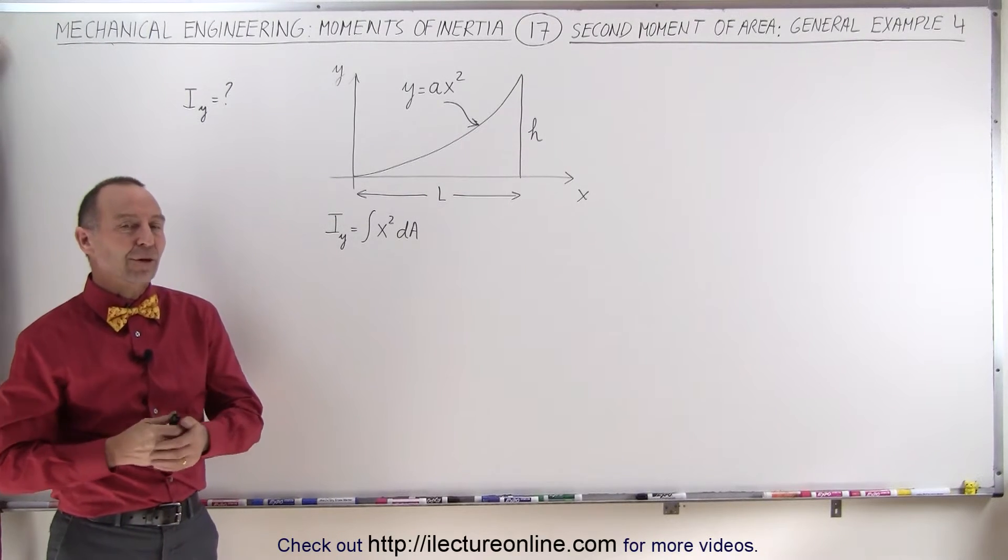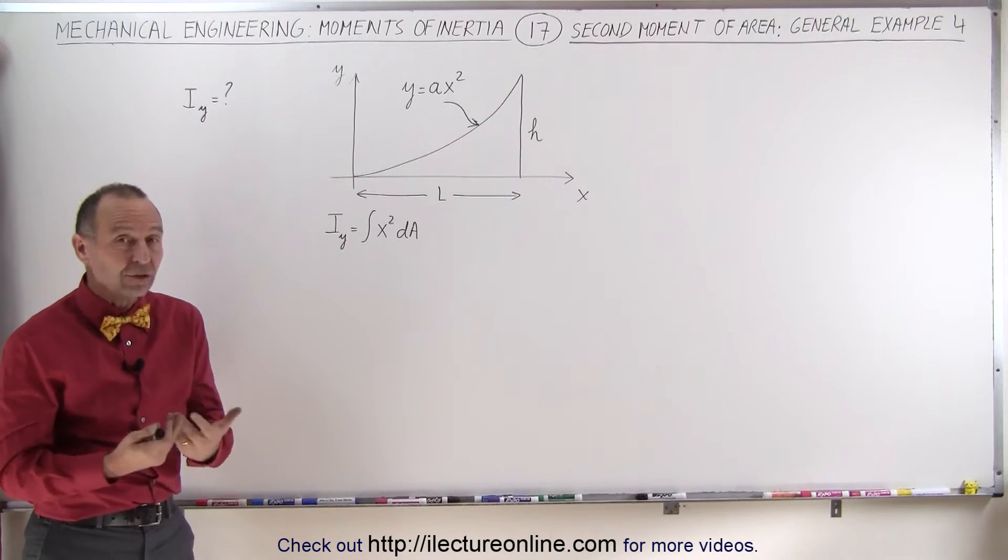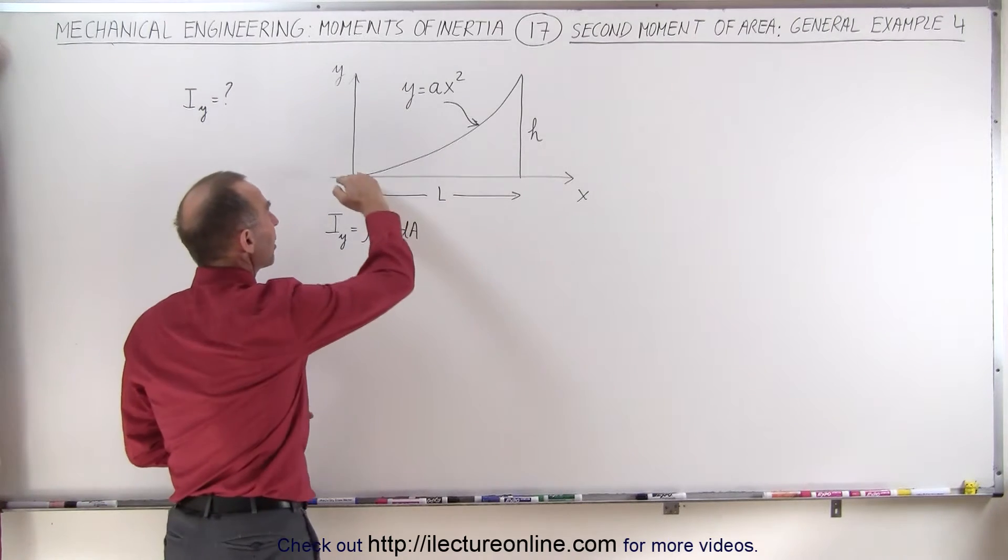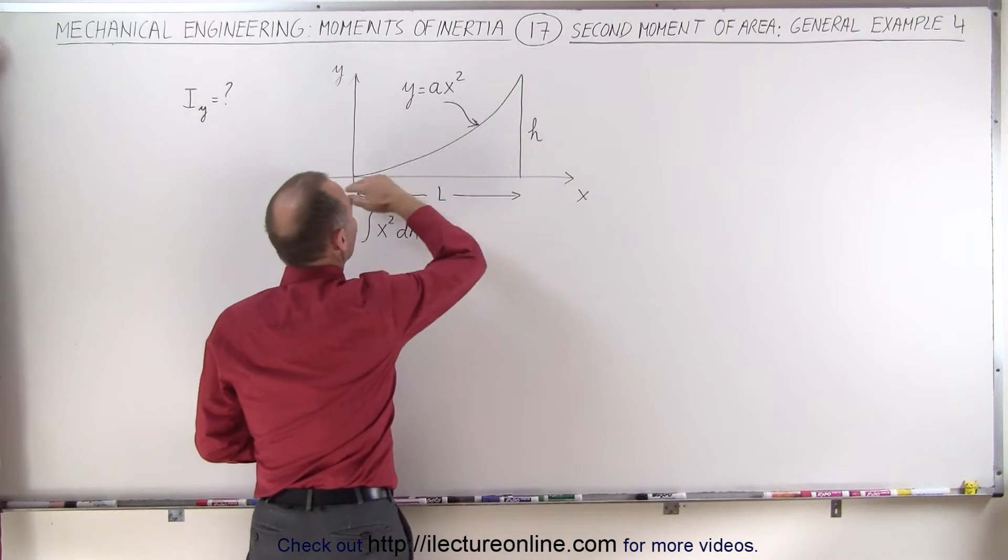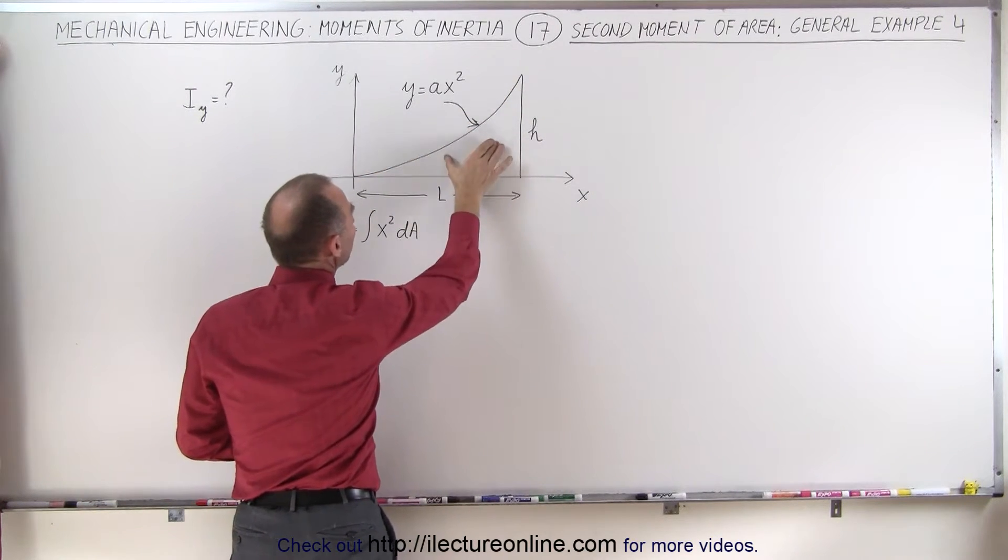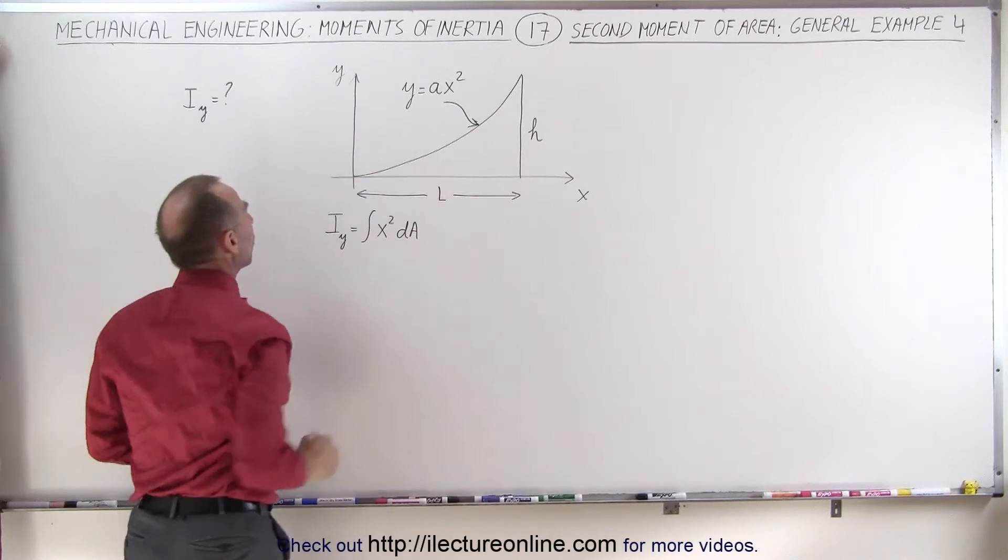Welcome to Electron Line. Here's our fourth example of a general situation where we have a parabolic shape here that we're trying to find the second moment of area of with respect to the y-axis.